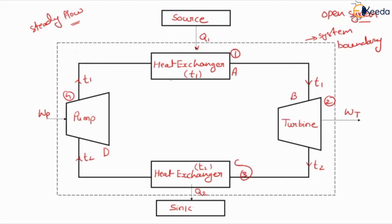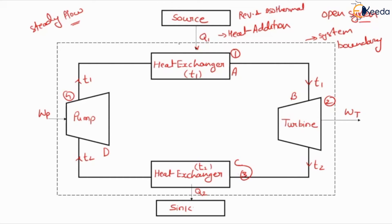In heat exchanger A, the first process is heat addition: heat Q1 is transferred from the source to the heat exchanger isothermally and reversibly at a fixed temperature T1. So from the source, heat addition is happening reversibly and isothermally. This is our first process.